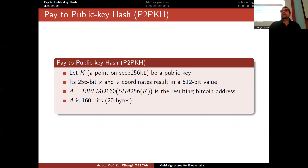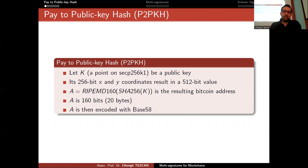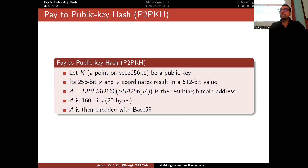If it were 20 printable characters it would be easy to represent, but not every byte is printable on screen. So we have to do some kind of encoding so that we can visualize these bits. Generally in computer science, people use base 64 for encoding, but in Bitcoin, base 58 is preferred. There is also an error-checking mechanism built into this encoding.